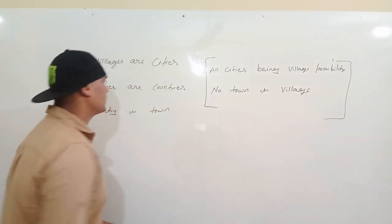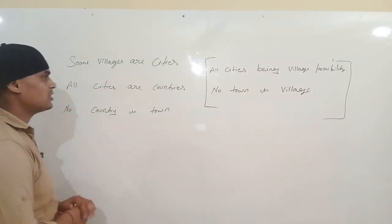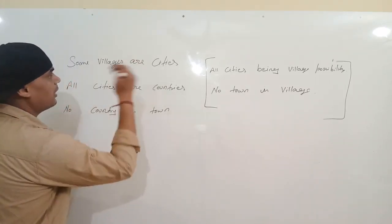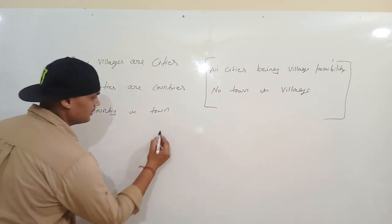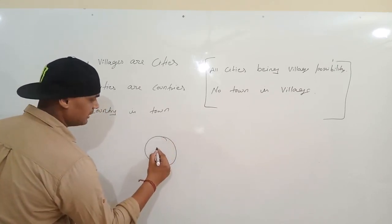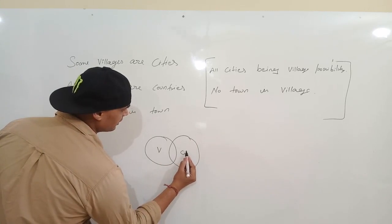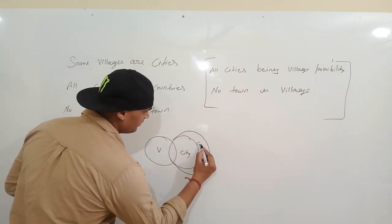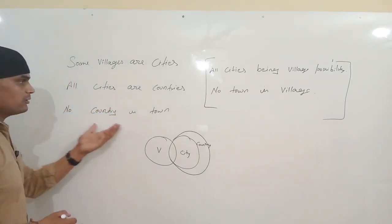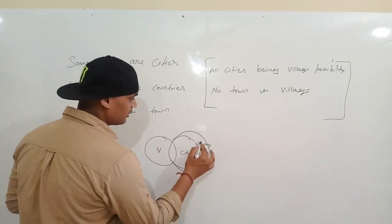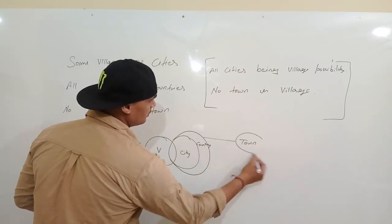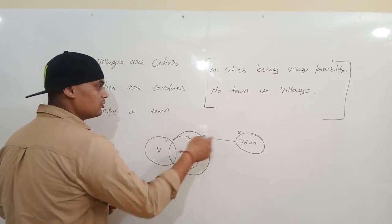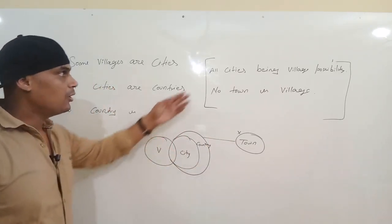Next question mein thoda aur acha level hai. Statement: 'All cities are countries' — sari ki sari city countries ke andar hain. 'No country is town' — country ka relation town ke saath nahi hoga. Lekin town ka relation village ke saath ho sakta hai, aur city ke saath bhi connection nahi hai kyunki wo country ke andar hai.